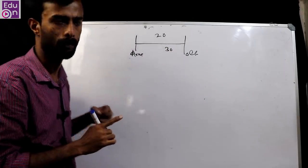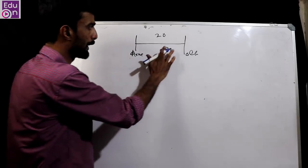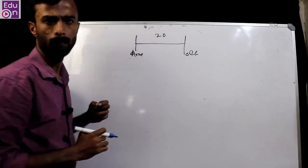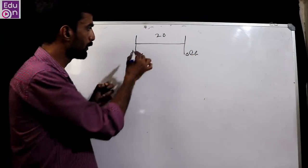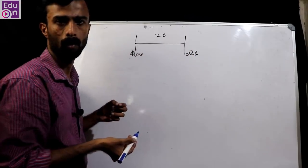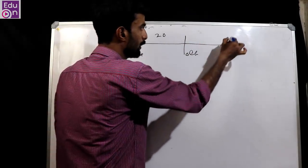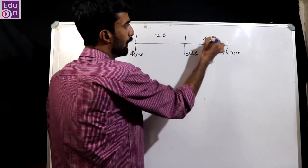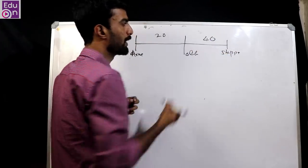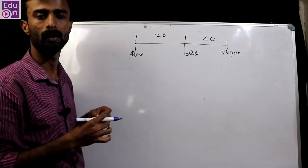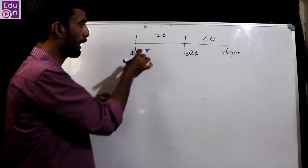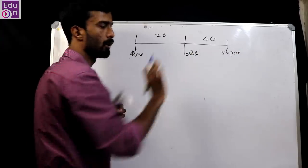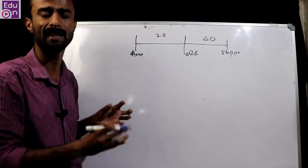I will tell you how to solve this. Home to office is 20 km per hour, and office to the next point is 40 km per hour. The distance between home to office and office to the shopping complex is equal.